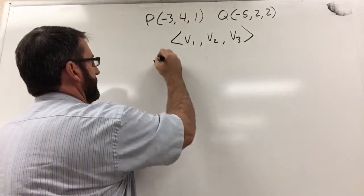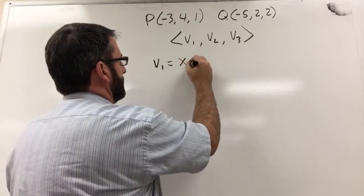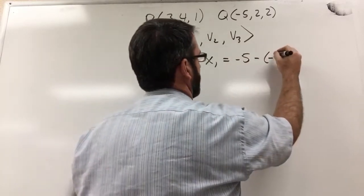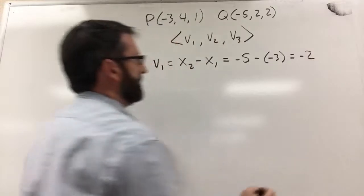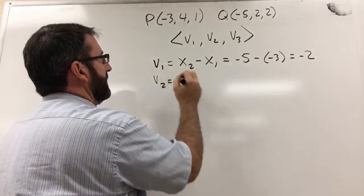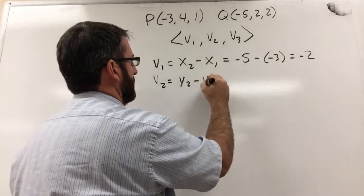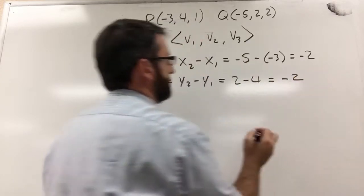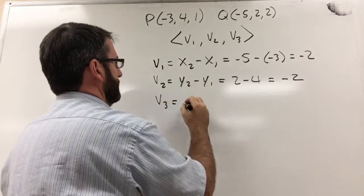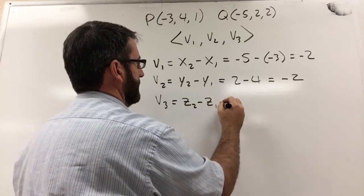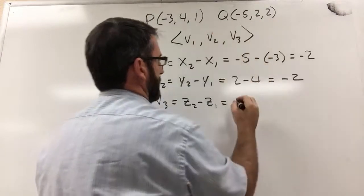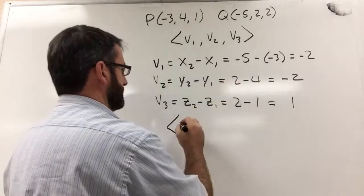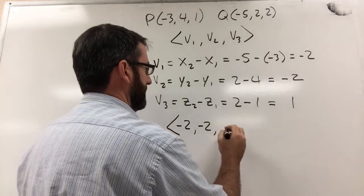V1 is equal to x2 minus x1, which is negative 5 minus negative 3, which is negative 2. V2 is equal to y2 minus y1, which is 2 minus 4, which is negative 2. And V3 is equal to z2 minus z1, which is 2 minus 1, which is 1. So the component form of this vector is ⟨-2, -2, 1⟩.